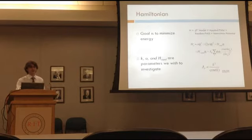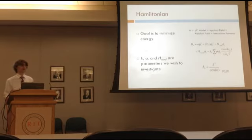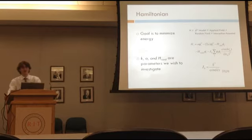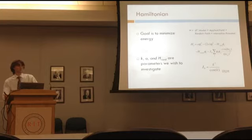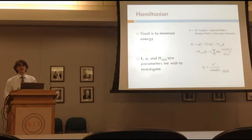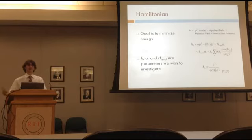From the phi-fourth model, we added more terms to make the Hamiltonian more complex and accountable. We added an applied field term to create hysteresis loops. We added a random field term to break up the symmetry of the domains and account for impurities in the sample. Then we have the most important term, which is the interaction potential, which accounts for all the nearest neighbors around each point on our lattice. In our simulations, we went out to eleven orders of nearest neighbors.